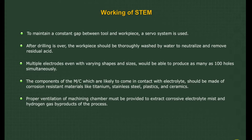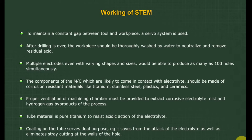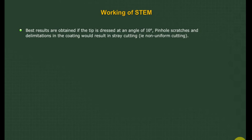Proper ventilation of the machining chamber must be provided to extract corrosive electrolyte mist and hydrogen gas — byproducts of the process. The tube material is pure titanium to resist the acidic action of the electrolyte. The coating on the tube serves a dual purpose: it protects from the attack of the electrolyte and eliminates stray cutting at the walls of the hole. Best results are obtained if the tip is dressed at an angle of 10 degrees. Pinholes, scratches, and delaminations in the coating would result in stray cutting — that is, non-uniform cutting.